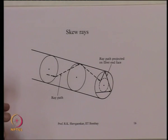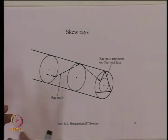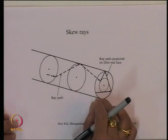The ray spirals around the axis, coming here, here, here, and so on. These are called skew rays. Meridional rays always intersect the axis, giving the highest intensity at the axis, whereas skew rays never meet the axis and as a result have low intensity at the center of the fiber.